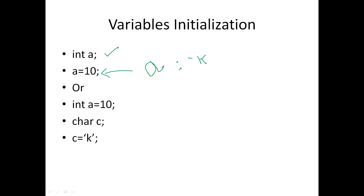If I try to store A equal to K, that's not possible because the data type is integer. You can separately declare and initialize, or do both in one step — for example, int A equal to 10. You can also declare char C and assign it the value K. Additionally, you can read values dynamically from the user using DataInputStream, FileInputReader, or Scanner class instead of directly assigning values.